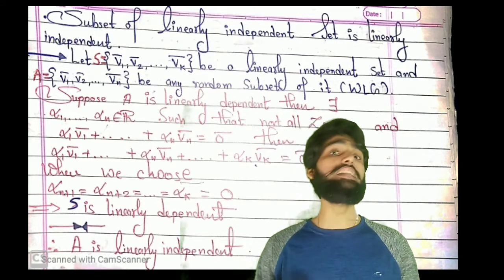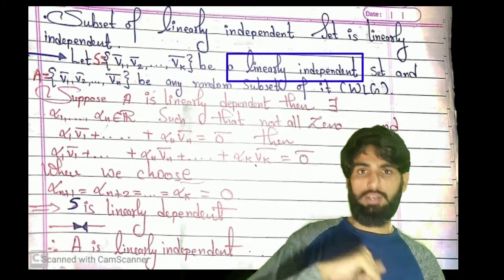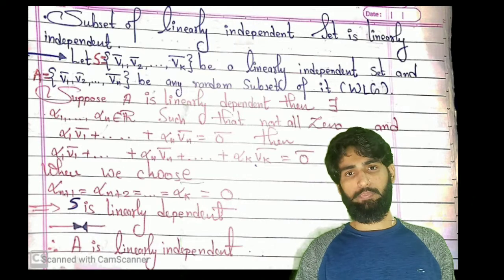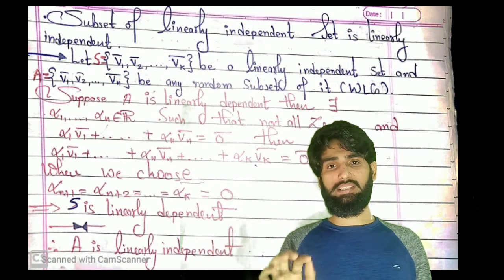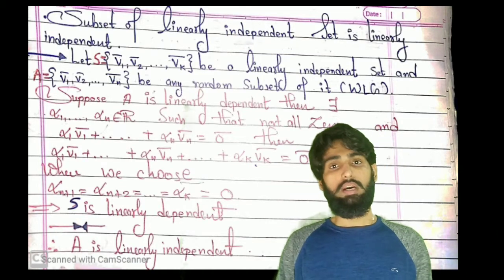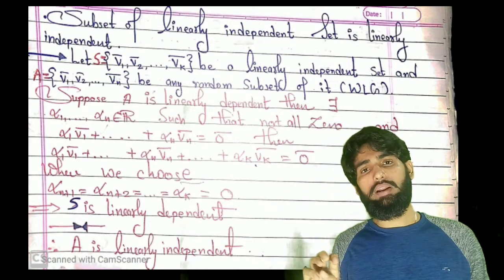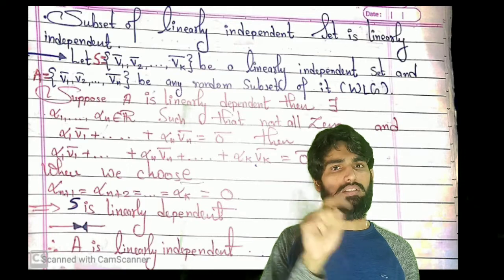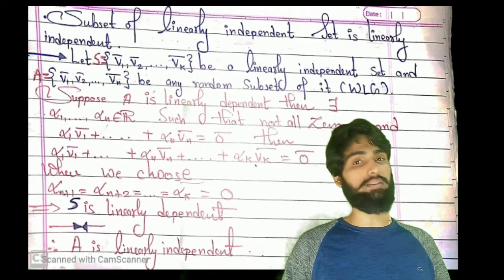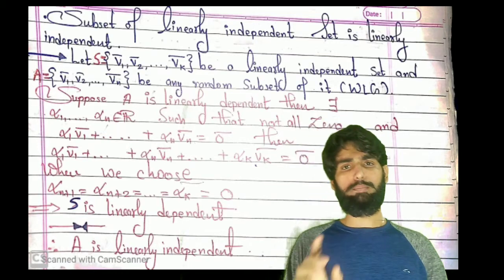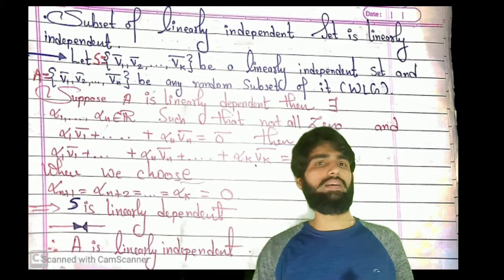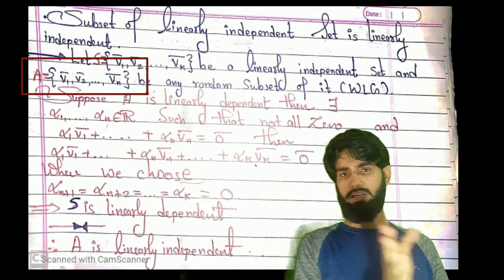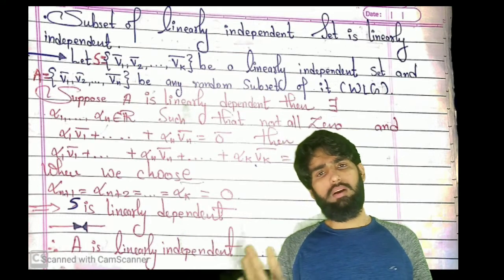Suppose I have a set S containing k elements v1 bar to vk bar, and that set is linearly independent. Let's revise the definition: a linearly independent set is one which is not linearly dependent, meaning there does not exist any non-trivial way to reach zero bar. The only way to make zero bar is by considering all coefficients equal to zero. Now I know my set S containing k elements is linearly independent.